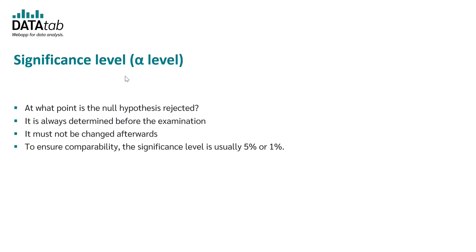The significance level is always determined before the examination and it must not be changed afterwards, for example in order to obtain the desired results. The significance level is usually set at 5% or it's set at 1%, in order to ensure a certain degree of comparability.